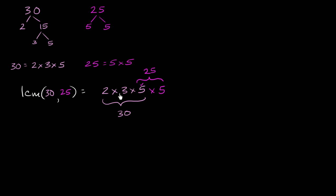So let's just multiply it out. This is essentially the prime factorization of our least common multiple. 2 times 3 is 6, 6 times 5 is 30, and 30 times 5 equals 150.